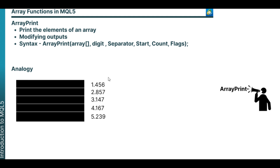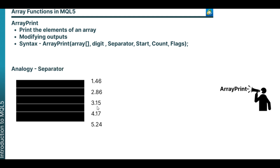One of the parameters is the digits. What digits does is that it helps you specify the decimal place you want the output to be once it is printed out. In this case, I want it to be in two decimal places, so it's going to approximate automatically. The next parameter is the separator, which helps you specify the spacing you want between the numbers once they are printed out. You can choose single spacing, double spacing, or modify it any way you want.